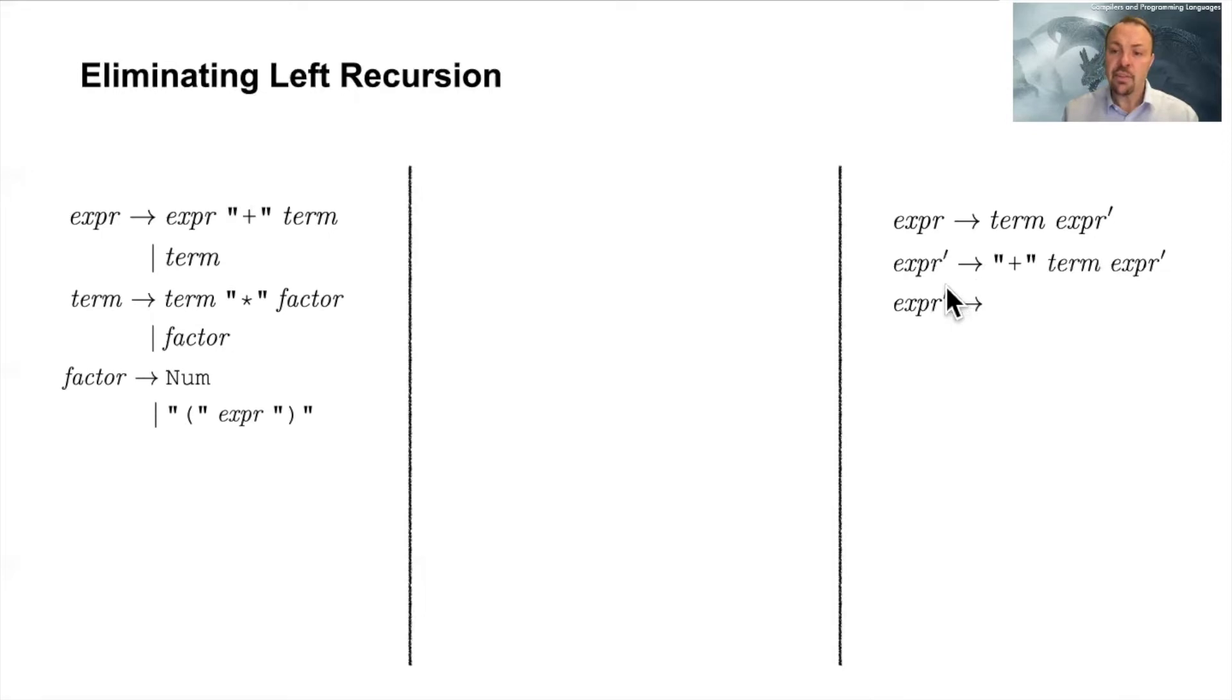So this expression prime here then starts with a plus. So you see here that the term here would be, for example, a number, and then the expression prime parses the plus and then comes another term and then expression prime again. So the trick here is to have actually the recursion to the right, so we get right recursion.